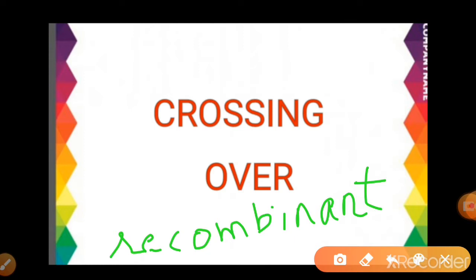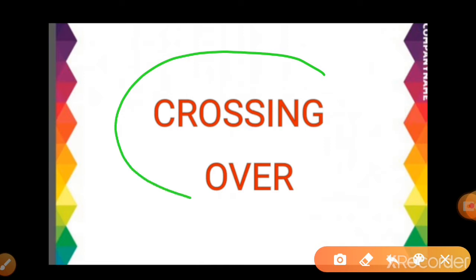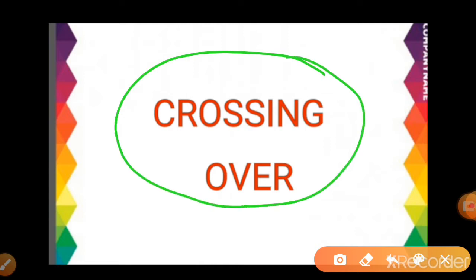Genes on different pairs of chromosomes are independent of one another. If we use the ratio of Mendel, we have a 9:3:3:1 ratio. This is called recombination, and it results in variation. Crossing over is also a process which results in the formation of new combinations, or we can say recombination.